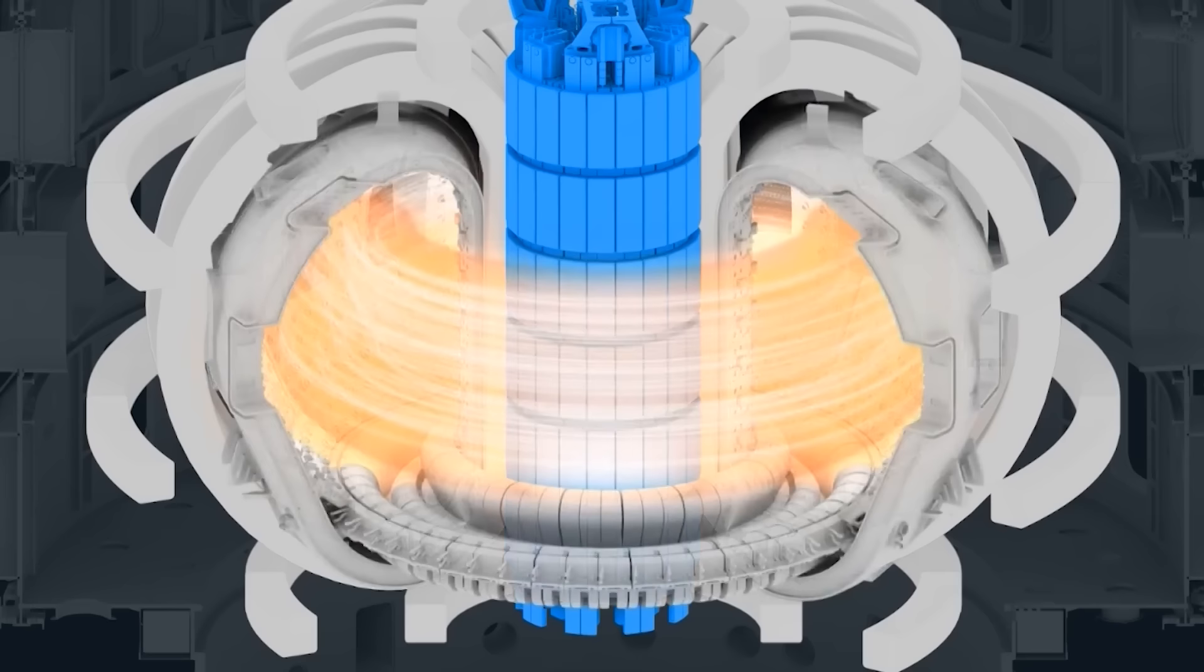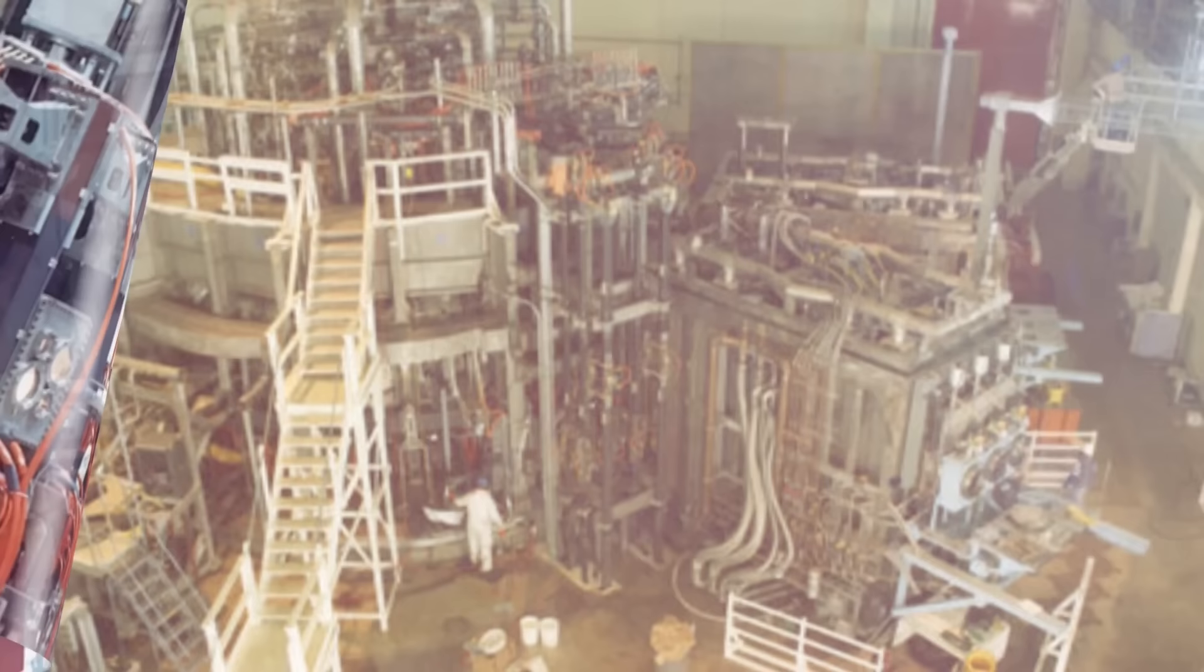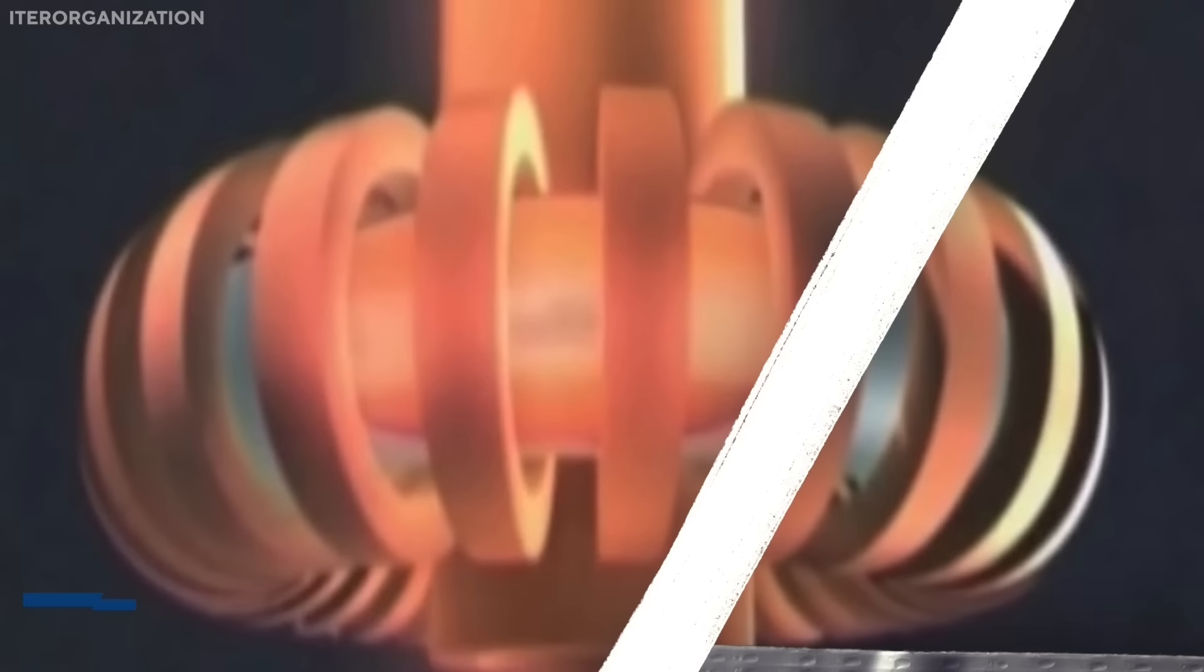The tokamak is a donut-shaped magnetic configuration invented in the Soviet Union and has proven to be the most successful and widely adopted design. The tokamak concept was further developed and improved by many countries, especially the United States, the United Kingdom, France, Japan, and China.